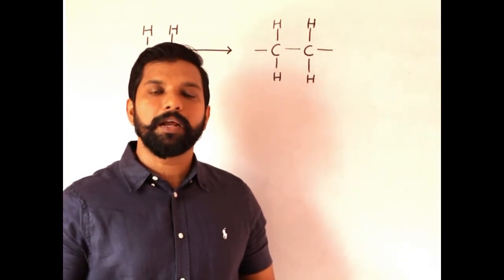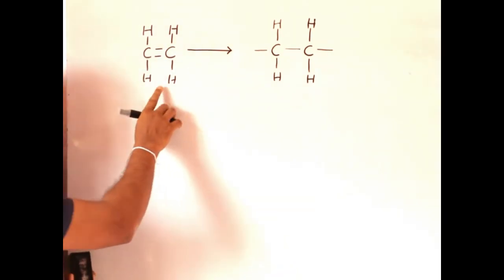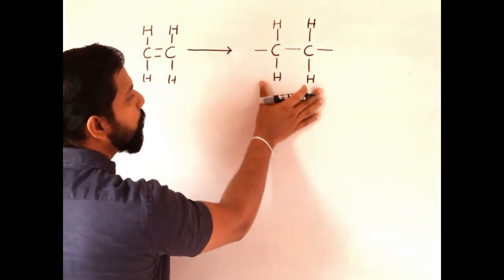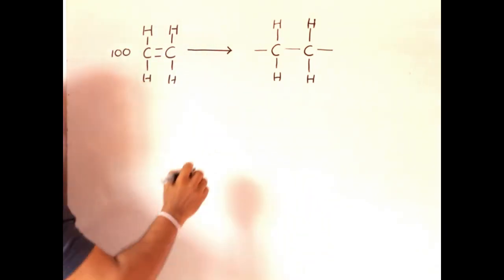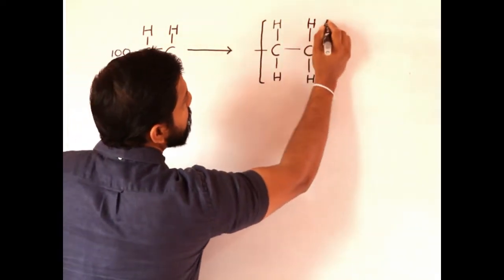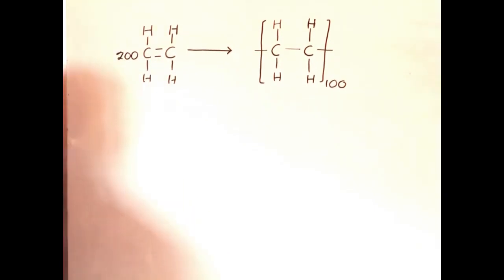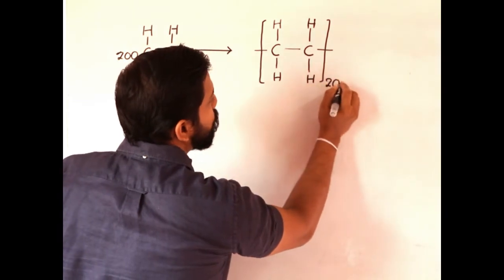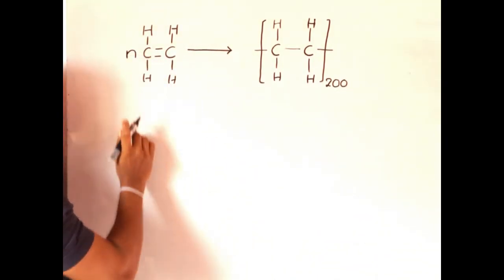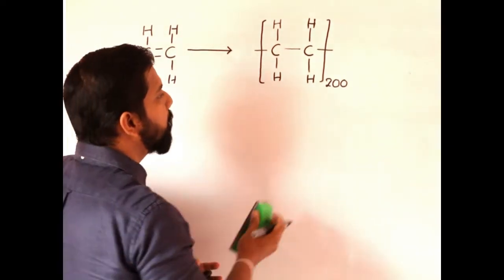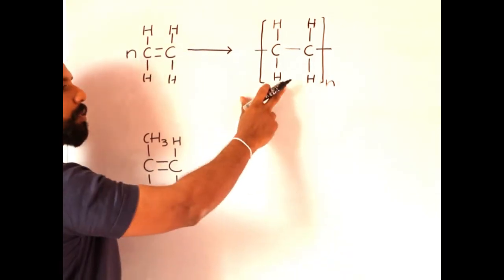We will now see how to write a balanced equation for polymerization. This is ethene the monomer, and this is the repeat unit of polyethene. Assume we react 100 monomers of ethene — we need to get 100 repeat units in the polymer. Similarly, 200 monomer units give 200 repeat units. Therefore, if n monomer molecules combine, we get n repeat units. This is the chemical equation for the formation of polyethene.